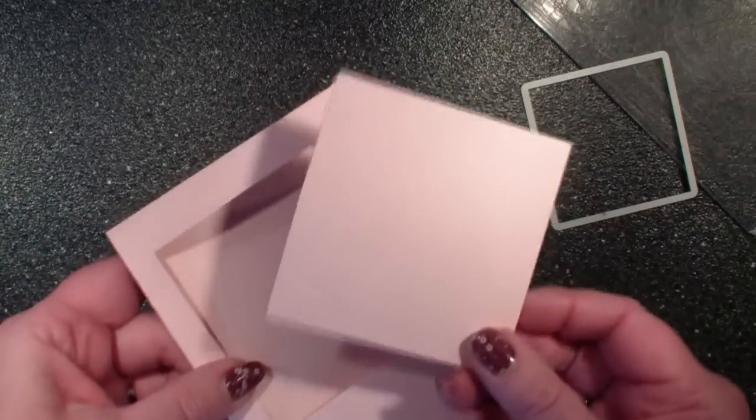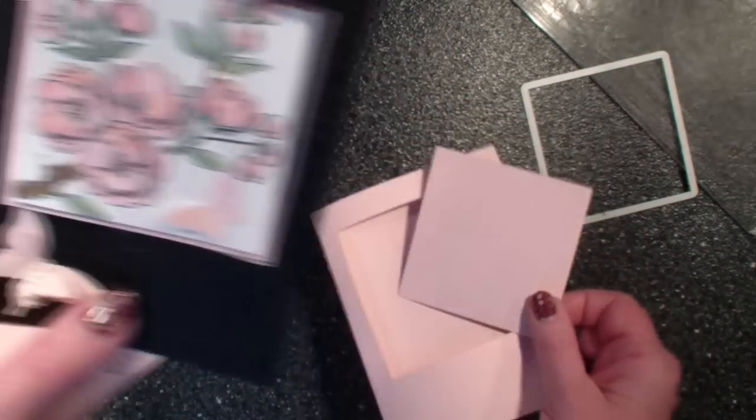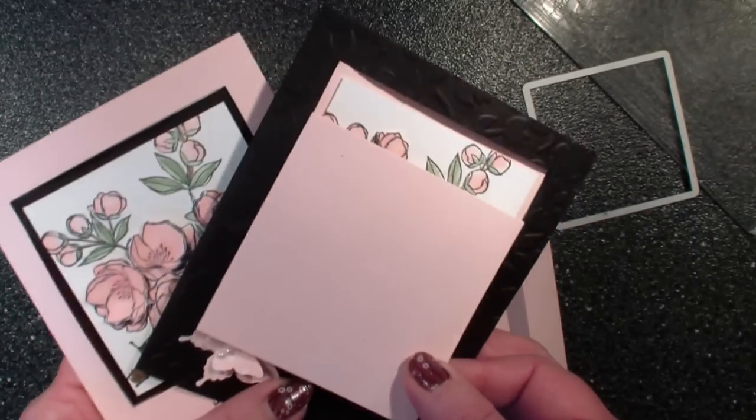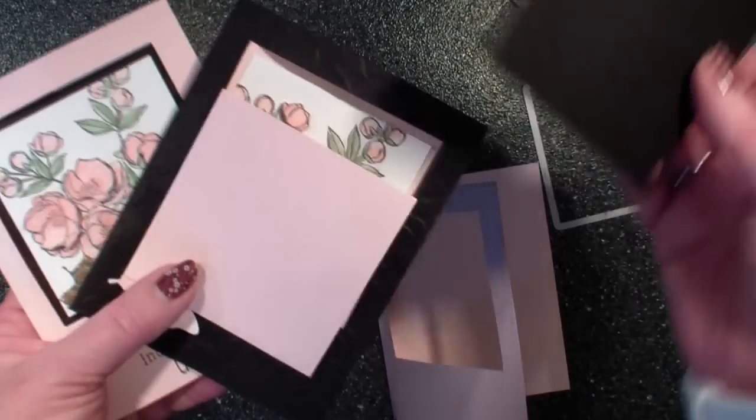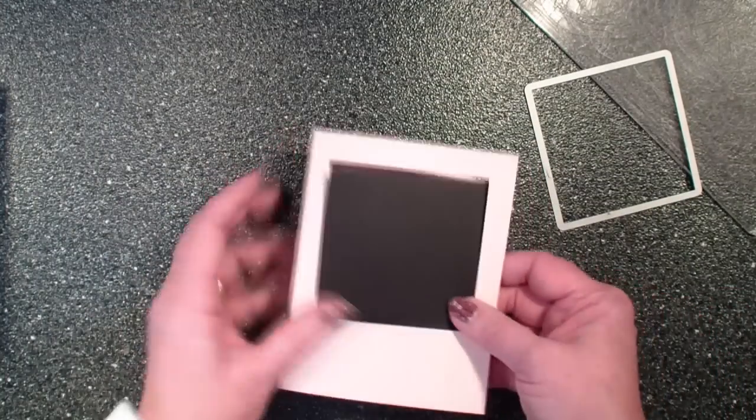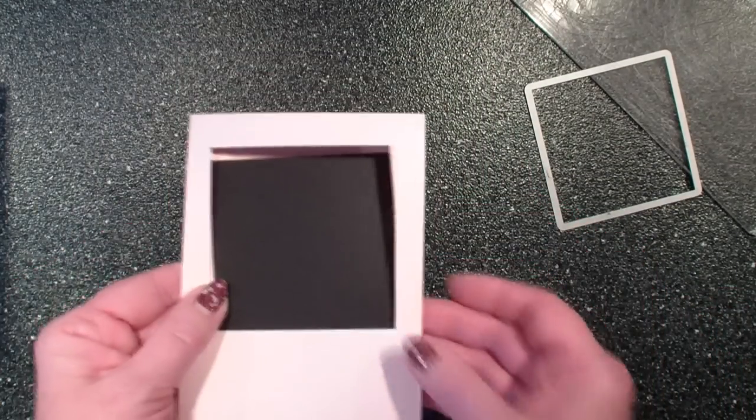Now this piece that you cut out, you're going to use on a coordinating color like I used the black here. So when I cut the square out of that black that's what I'm going to be using for my layer on this piece.